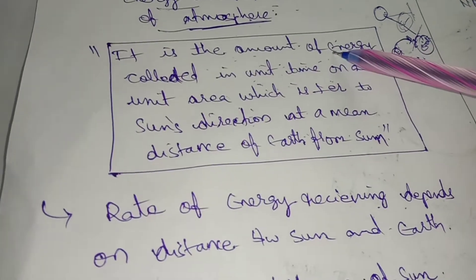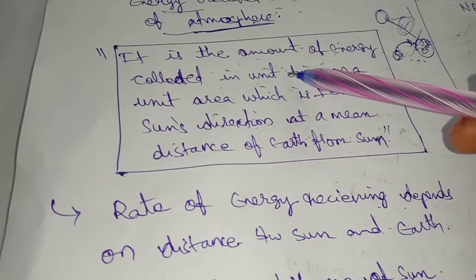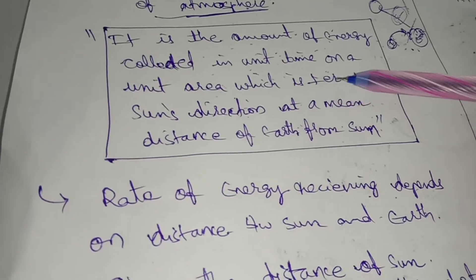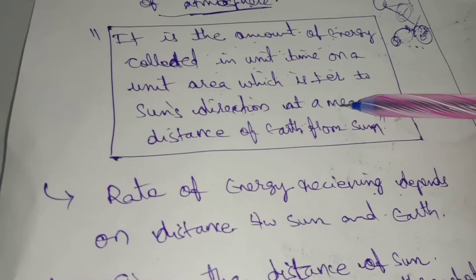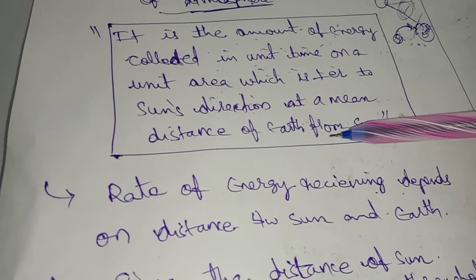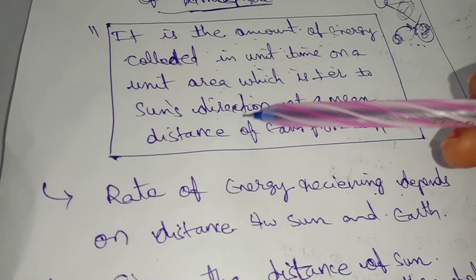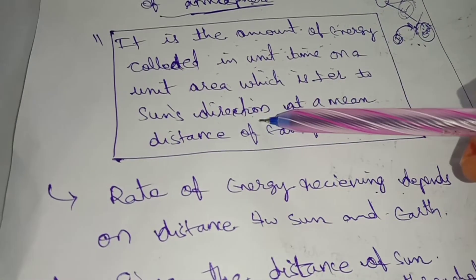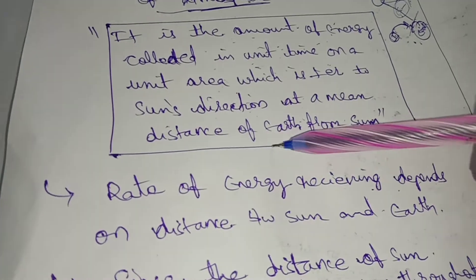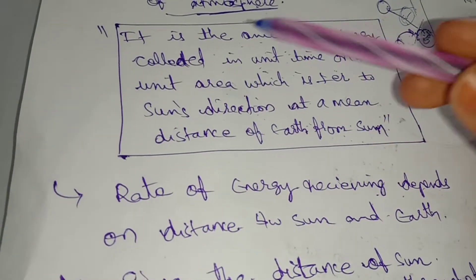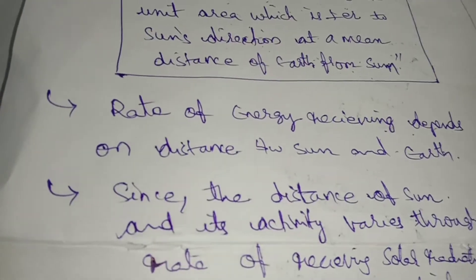It is the amount of energy collected in unit time on unit area, which is perpendicular to the direction of the sun, at a mean distance of Earth from the sun. This is the standard definition — you have to write it as it is, no changes.